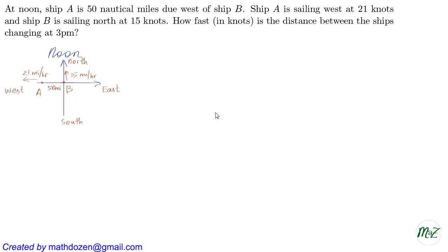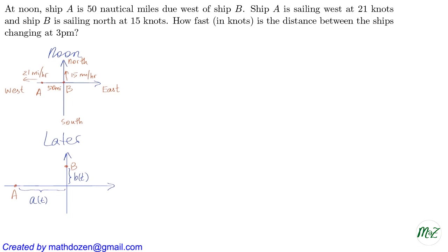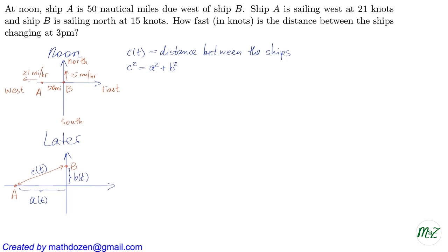This is the initial position at noon. Sometime later, Ship A will be somewhere further to the left and Ship B will be somewhere up there. To introduce coordinates, we can think of the distance of Ship A from the origin as A, the distance from Ship B to the origin as B, and the distance between the ships as C. Since we have a right triangle, we can use the Pythagorean theorem: C² = A² + B².